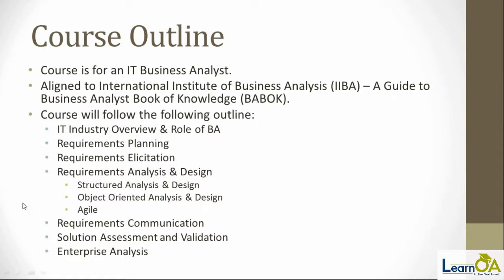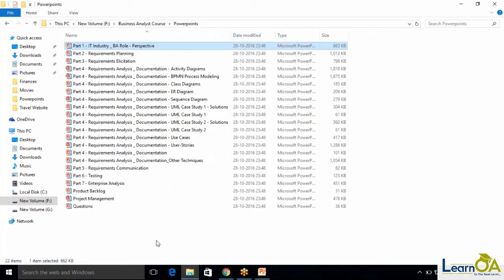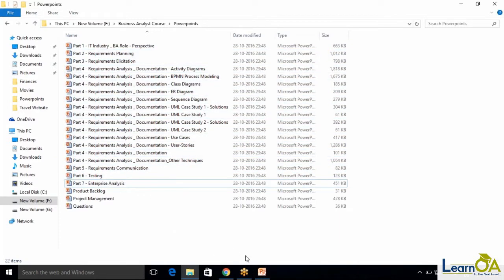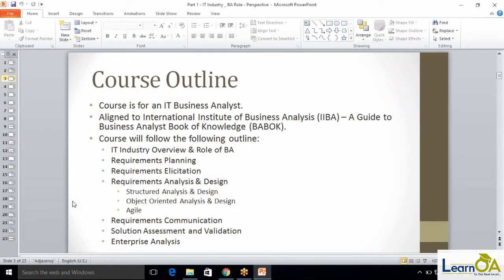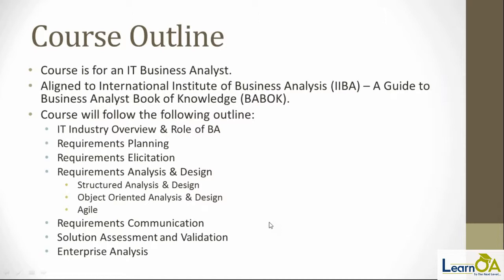From a syllabus point of view we are covering all six knowledge areas, but the way we learn will be a little different. I'll start with a basic use case example and build up from there. We'll cover all these topics — I've organized them according to the six chapters, parts two through seven, plus an additional chapter on industry overview covering what a business analyst does across projects. We'll pick up a project example and learn through that — no purely theoretical classes.